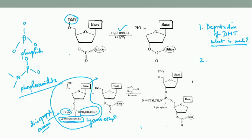At this stage the first nucleoside has a free 5-prime OH, while the incoming component has its 5-prime OH protected as DMT and its 3-prime OH attached to a phosphorous with a good leaving group. The diisopropylamine, upon protonation, wants to leave because the oxygen lone pairs can facilitate its expulsion — kicking out isopropylamine.